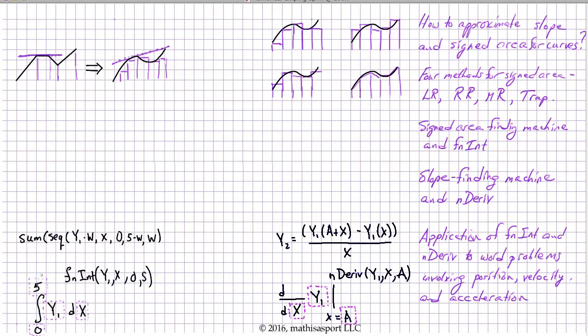Now, unlike what we found with F-N-I-N-T where the TI built function was essentially in every way superior to our own signed area finding machine, that's not the case with in Deriv.